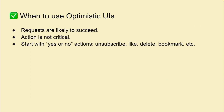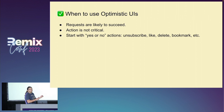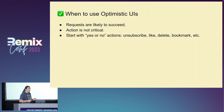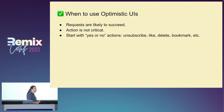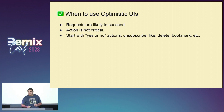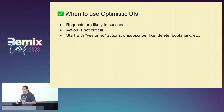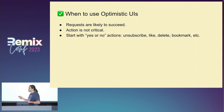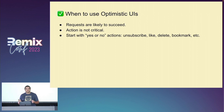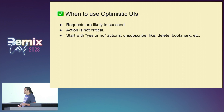So when to use Optimistic UI? The most important thing is that the request is likely to succeed. It should work most of the time and fail only in rare occasions, because you need to deal with errors. Like if an error happens, do you display an error message, or maybe a retry button? You can retry it yourself, and you need to decide what to do in those cases.